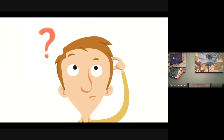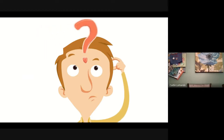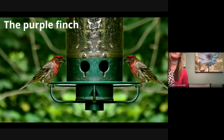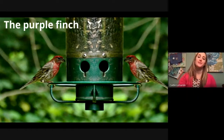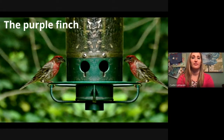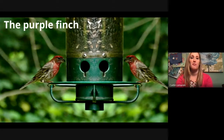Here's our final question: what is the state bird of New Hampshire? The state bird of New Hampshire is the purple finch. Purple finches are cute little birds that love sunflower seeds, millet, and thistle. They are mild-mannered birds — not very aggressive like a lot of other birds. This has hurt their population because they don't fight for food as aggressively as other birds do, but there are still a lot of purple finches in New Hampshire.